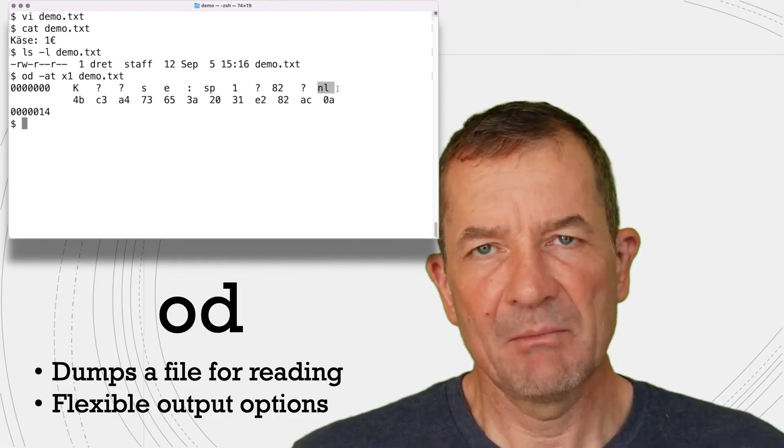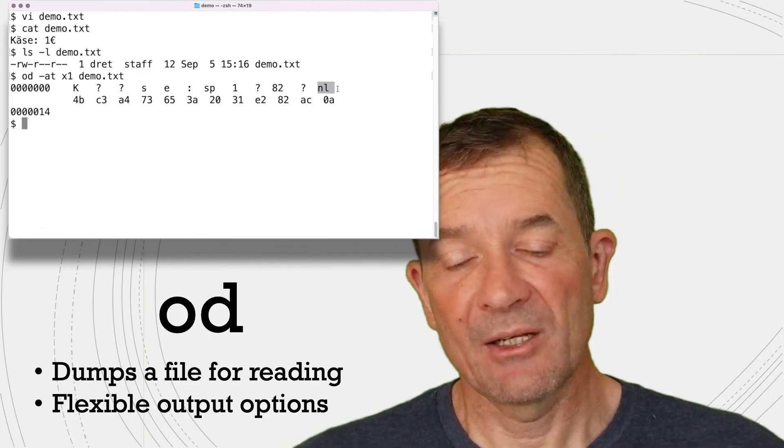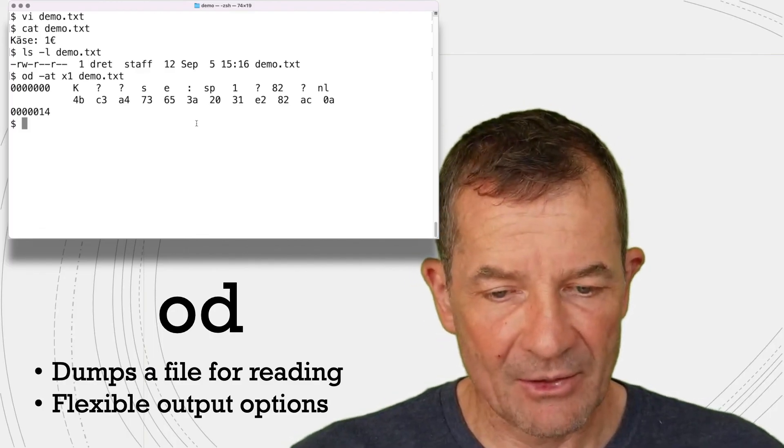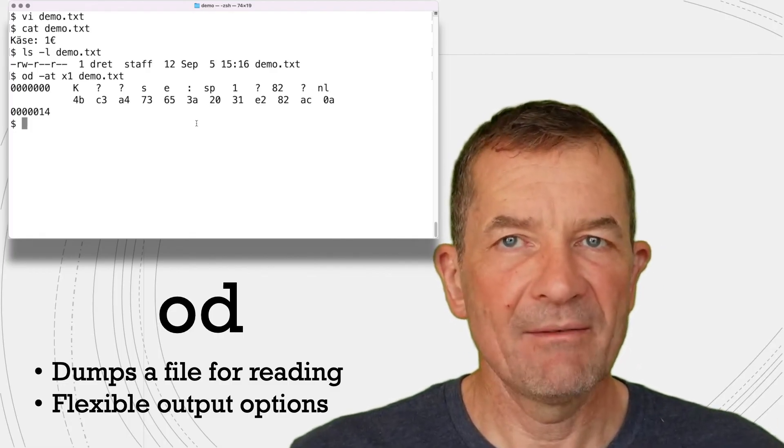And then because it's Unix, this one here is macOS, the files are always terminated with a new line character. So this is a very simple way how you can just look at what a file looks like.